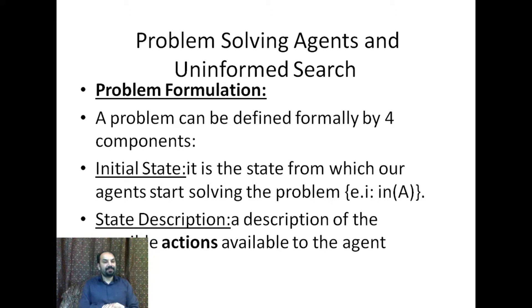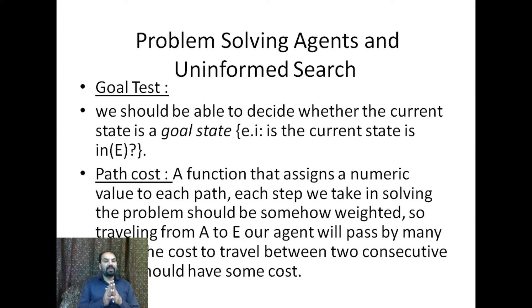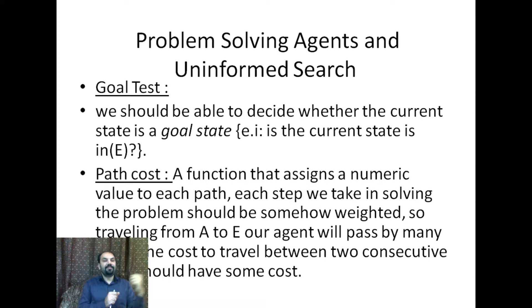The second component is the state description, through which all possible actions the agent can perform are defined. The third component is the goal test, which determines whether the goal state has been achieved or not — for example, whether the agent has reached state E. The fourth component is path cost, which is a function that assigns a numeric value to each path.